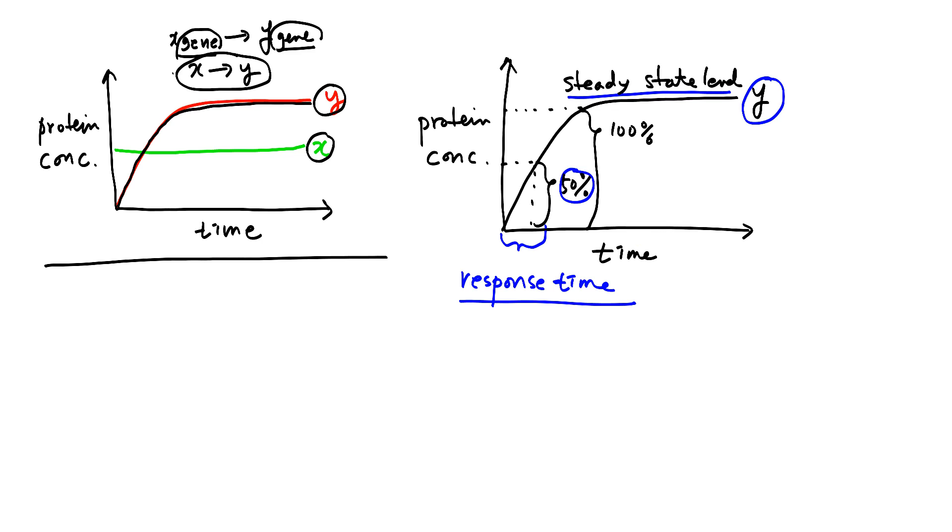So if this response time is long, then we have slow process or slow dynamics. And if that is short, we have fast process. For example, if you have a dynamics something like this, which is steady state in this fashion, then what is this response time? This will be the response time. And it's shorter and indicates that our dynamics is faster.